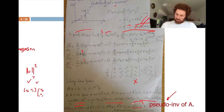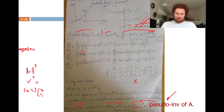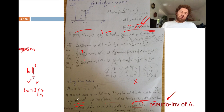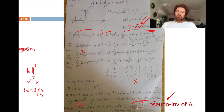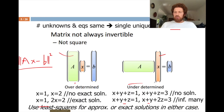In summary, to solve Ax = b in the least squares sense, multiply both sides by the pseudo-inverse: x = (AᵀA)⁻¹Aᵀb.